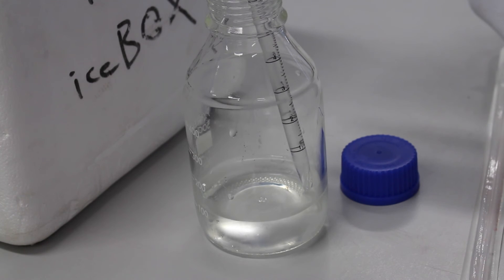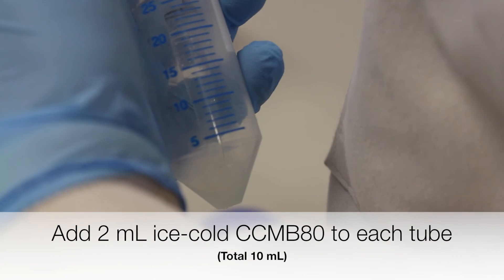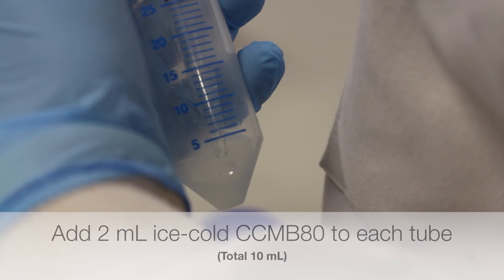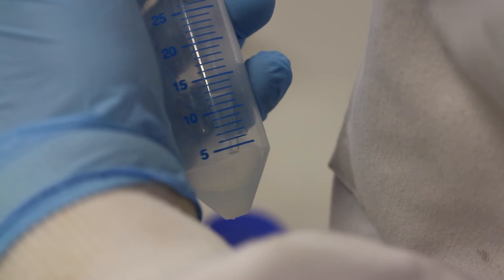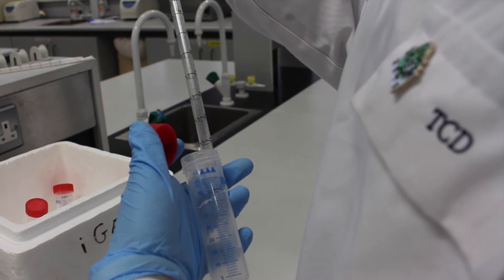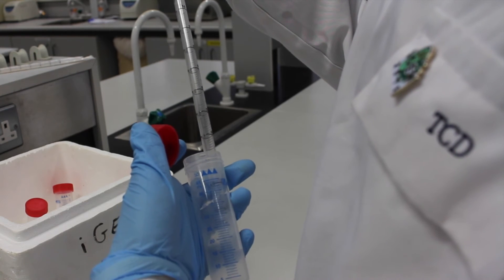The pellets are re-suspended by adding 2 ml of ice-cold CCMB-80 buffer into each tube. If using multiple containers, such as in this video, combine the cells post-resuspension.